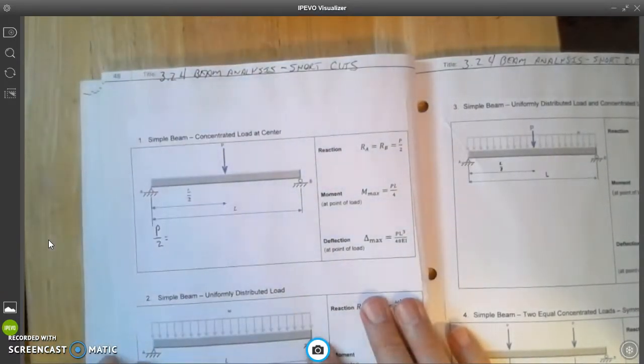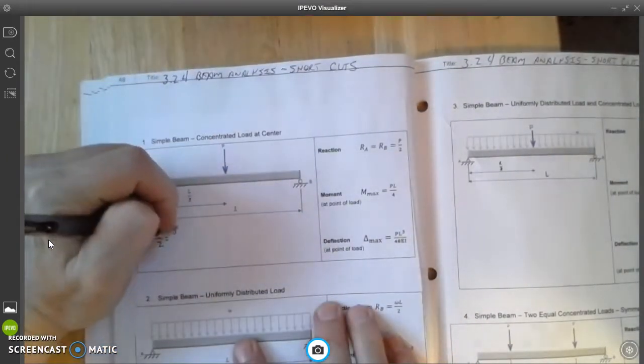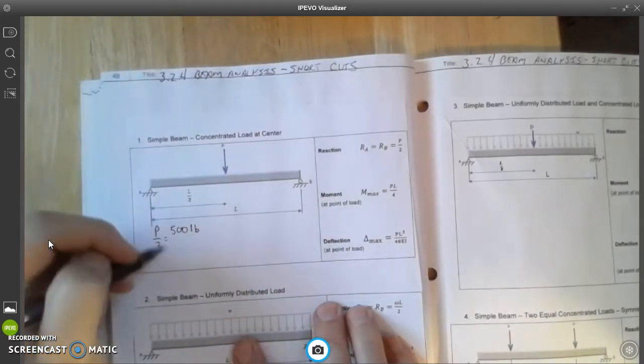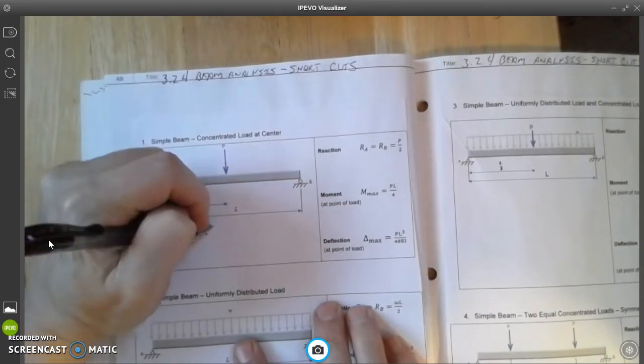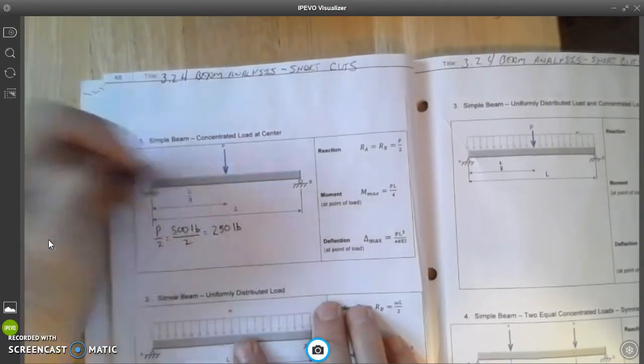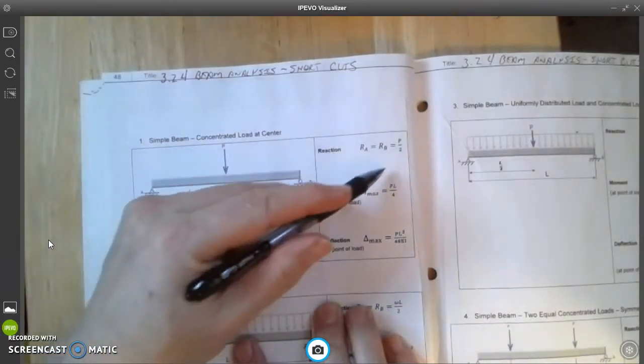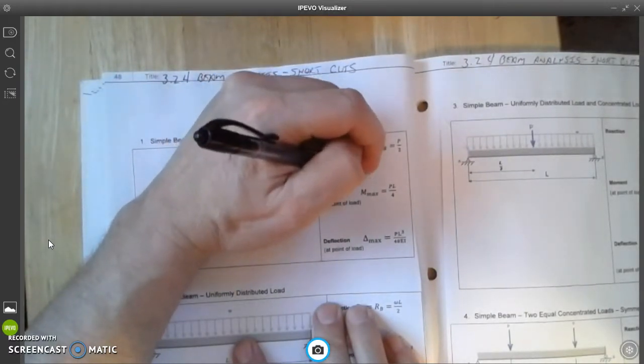From our first page we know that the value of p is 500 pounds. You're going to divide that by 2, and that equals 250 pounds. So I've got that value right there in this box - I'm going to write 250 pounds.